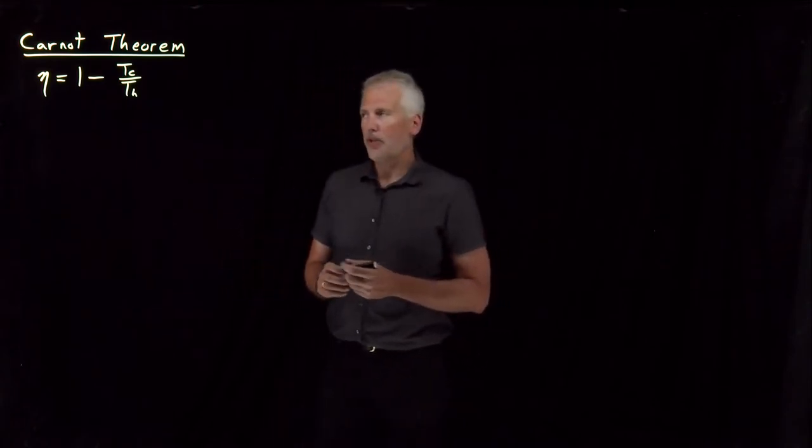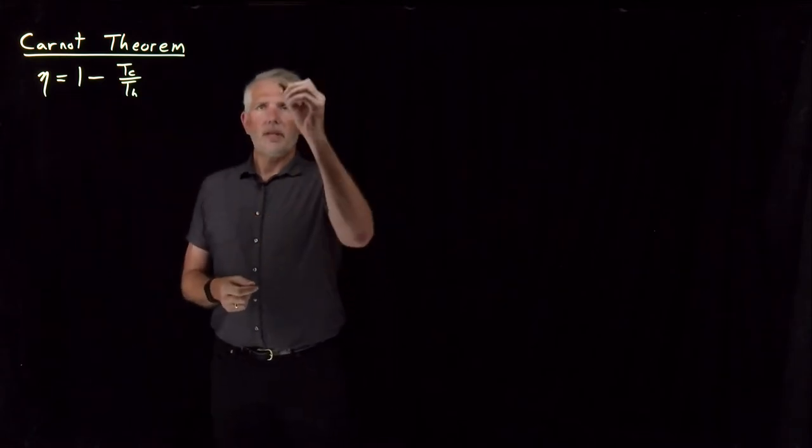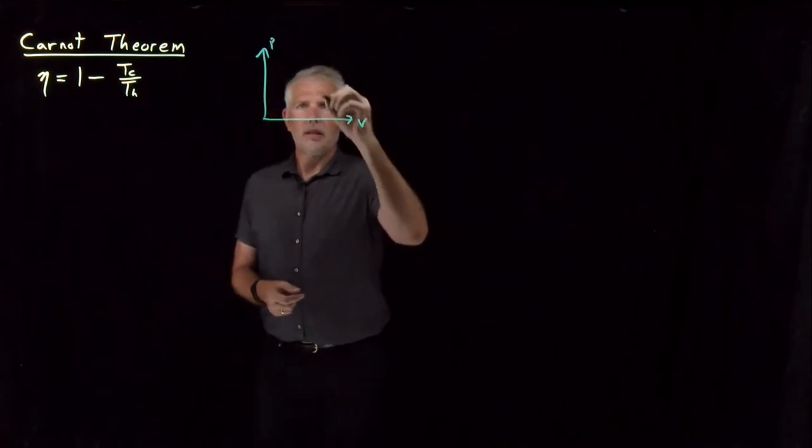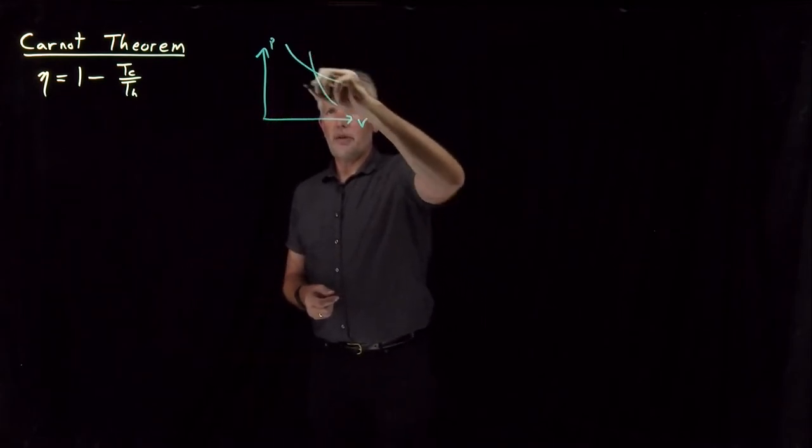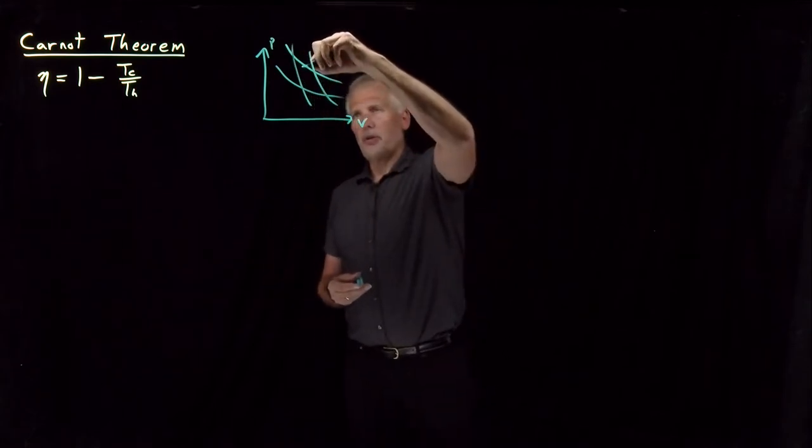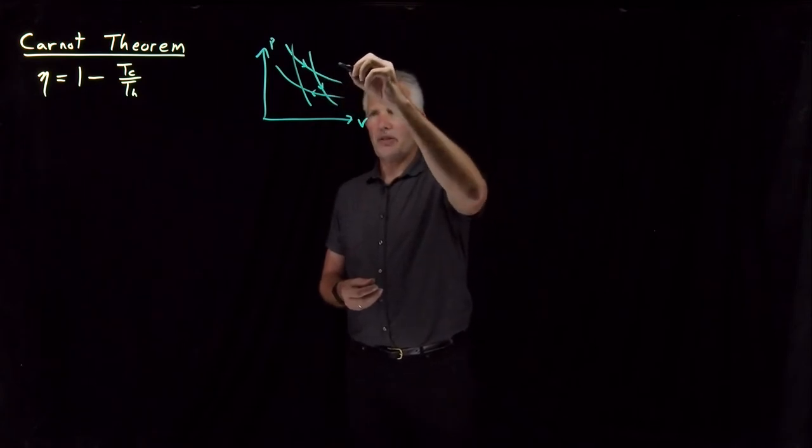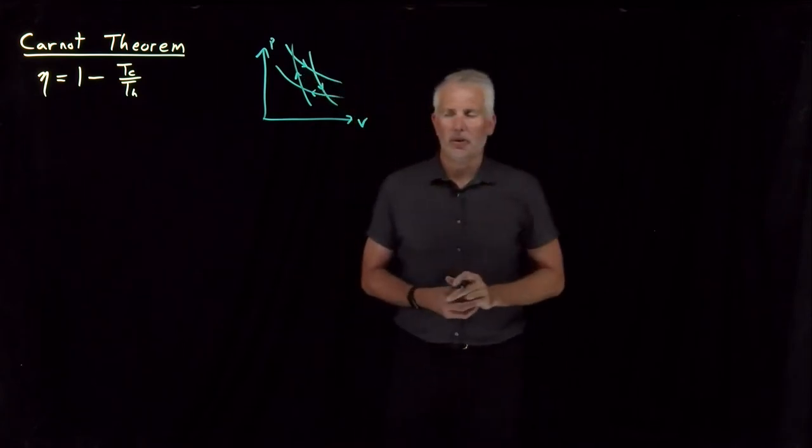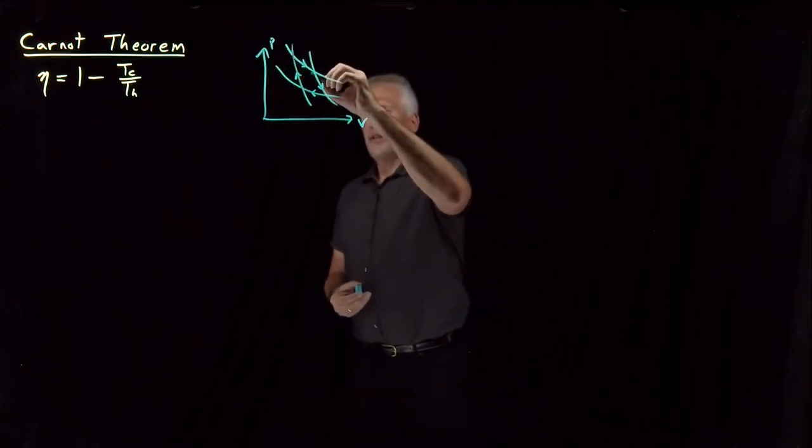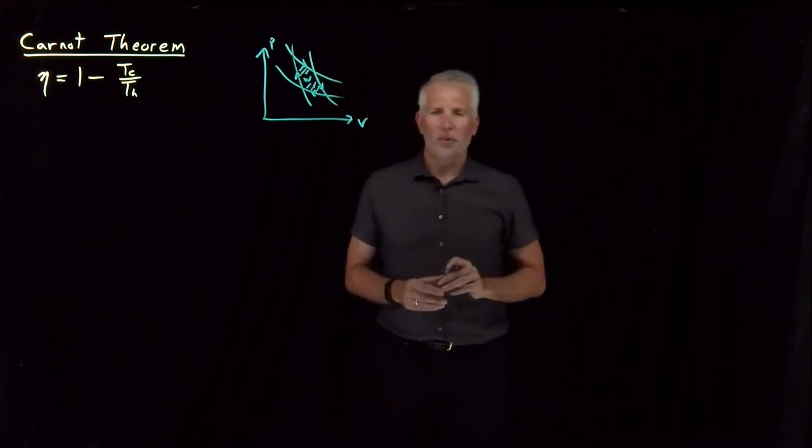So first let me explain what I mean by other types of heat engines. The Carnot cycle is a sequence of adiabatic and isothermal expansions. So we do an isothermal, reversible and isothermal expansion, adiabatic expansion, isothermal compression, adiabatic compression. Each one of those steps is reversible and either isothermal or adiabatic. The net work we get out of that process, we can calculate numerically.